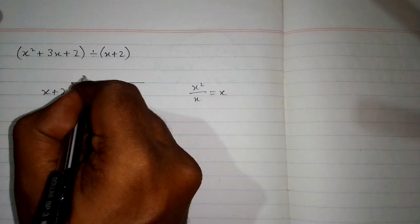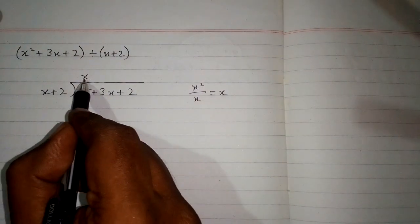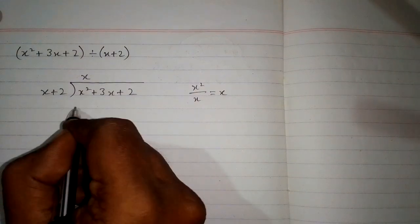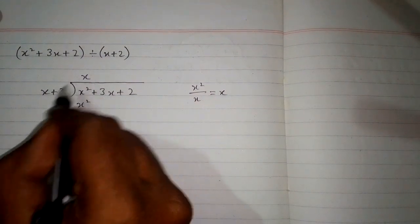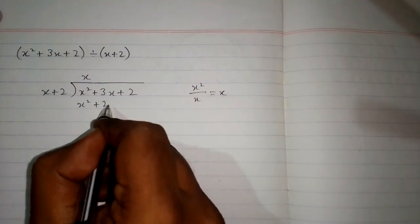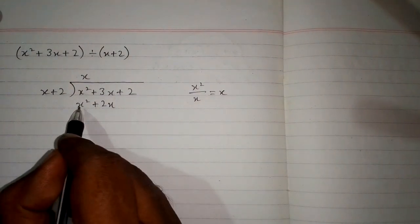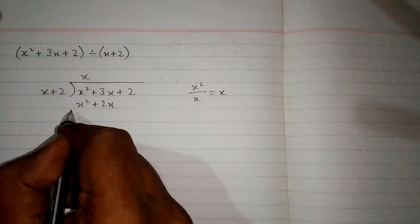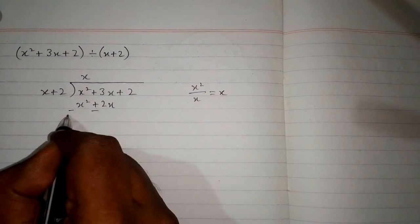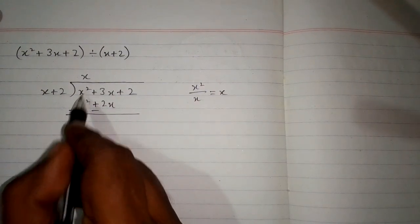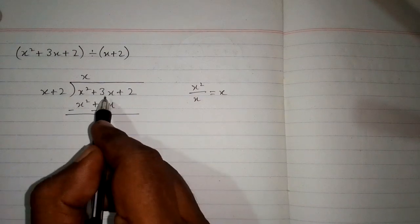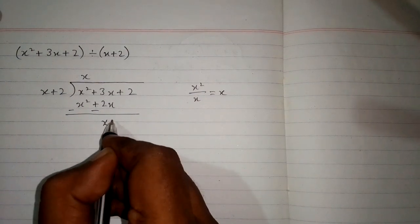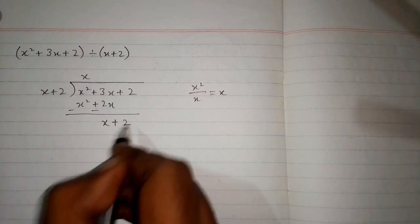We write x in the quotient and then multiply x by x plus 2. So x multiplied by x is x squared and x multiplied by 2 is 2x. Now we subtract this expression: x squared minus x squared is 0 and 3x minus 2x is x.